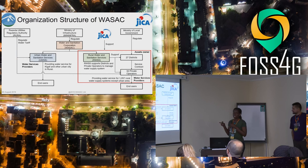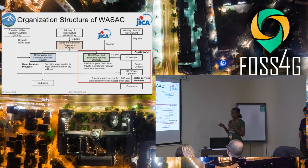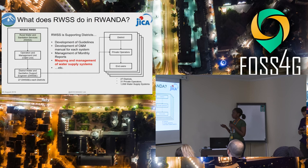WASAC has two main services. The urban water and sanitation service where it is a service provider — it supplies water to end users. In rural areas it acts as a supporter because the infrastructure is owned by the district. They are the infrastructure owners and they hire private operators. We currently have 32 private operators in 27 districts.